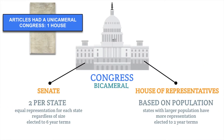Let's focus a bit more on the legislative branch, because there are some significant changes between what was happening under the Articles and what's going to happen under the Constitution. Under the Articles of Confederation, there was a unicameral Congress — a one-house Congress — where each state essentially had one vote, no matter the size or population. Under the Constitution, we're creating a bicameral Congress made up of two houses: the Senate and the House of Representatives. For the Senate, we'll see equal representation of two senators per state, and the House of Representatives will be based on the state's population, with larger states sending more representatives to Congress.